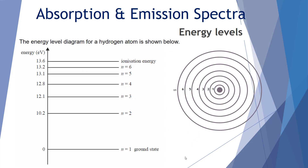Here's an energy level diagram for the hydrogen atom. When we compare the left to the right, hopefully we'll make some sense of this structure. First of all, we've got our ground state — the most stable structure we have for an electron in a hydrogen atom.